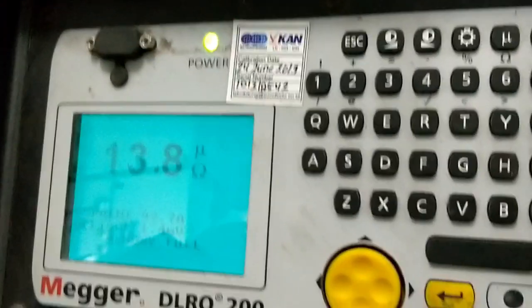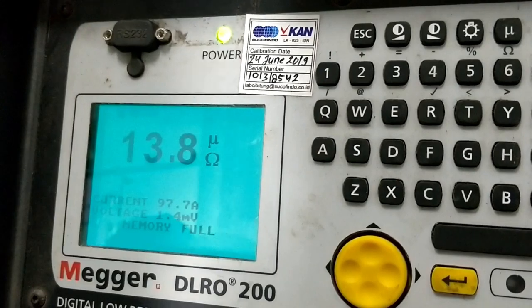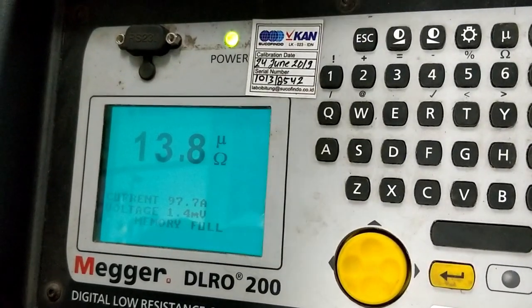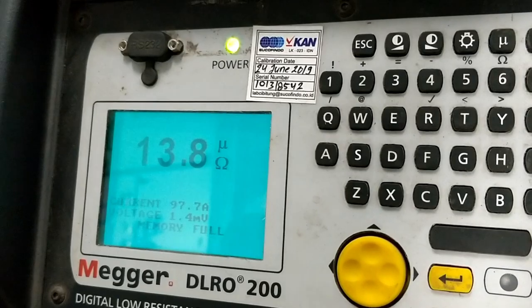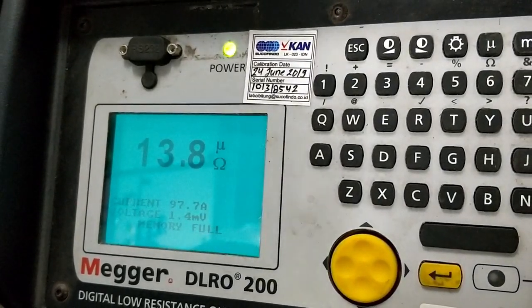Now I got the value 13.8 micro ohm and current injected is 97.7 amps. Drop voltage is 1.4 mV.